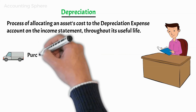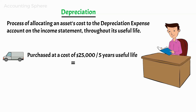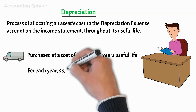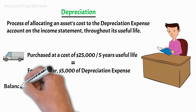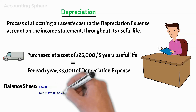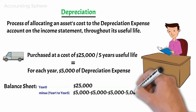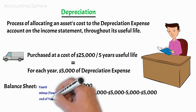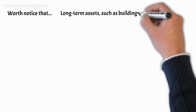For example, assume that Fast Print has a van with a useful life of five years, purchased at a cost of $25,000. The accountant might match $5,000 of depreciation expense ($25,000 divided by 5 years) with each year's revenues for five years. Subsequently, each year the carrying amount of the van reported on the balance sheet will be reduced by $5,000 until, after five years, its carrying amount will be zero — the end of the van's expected useful life.